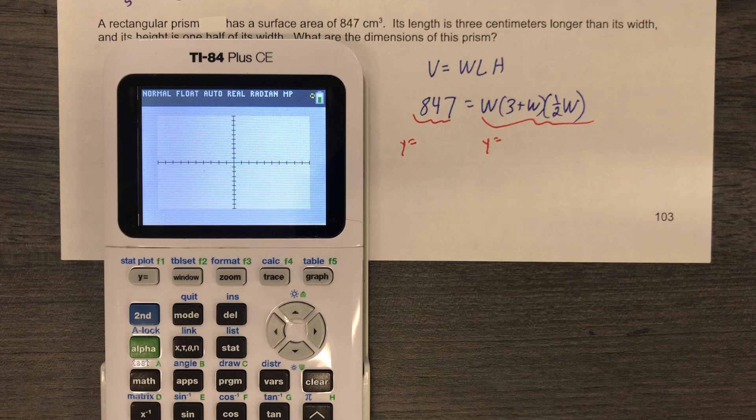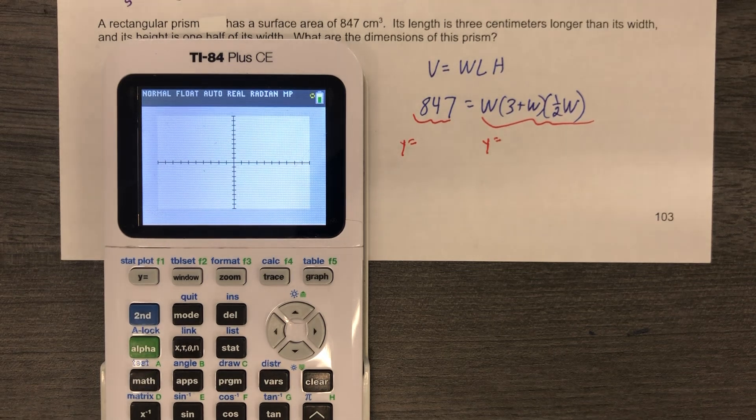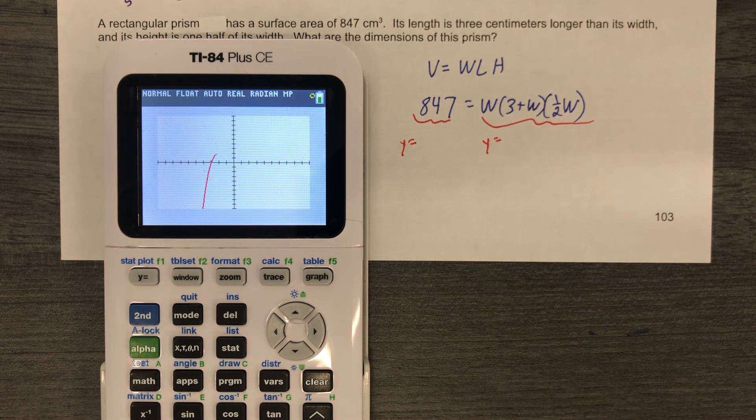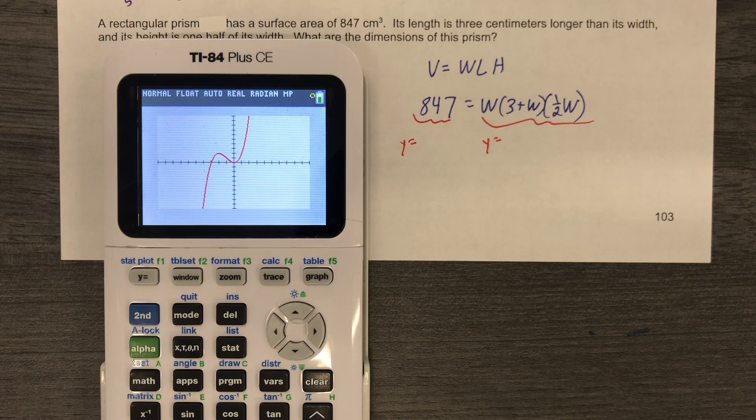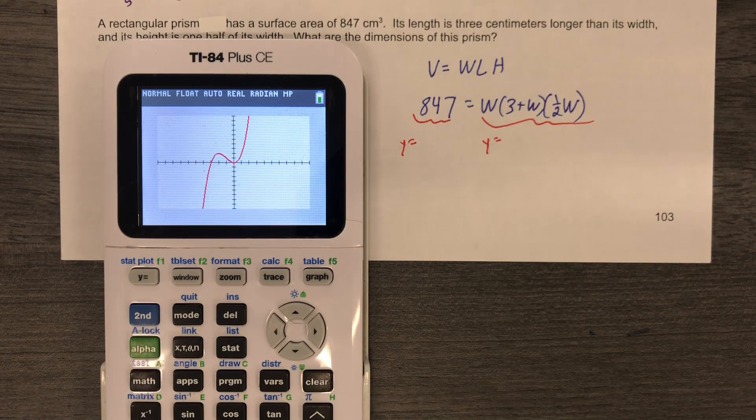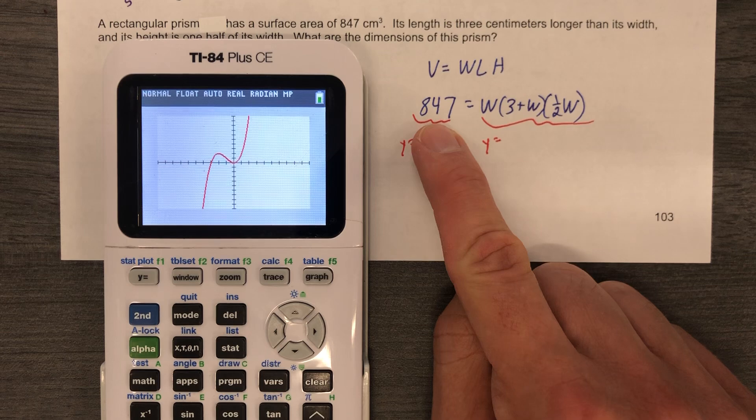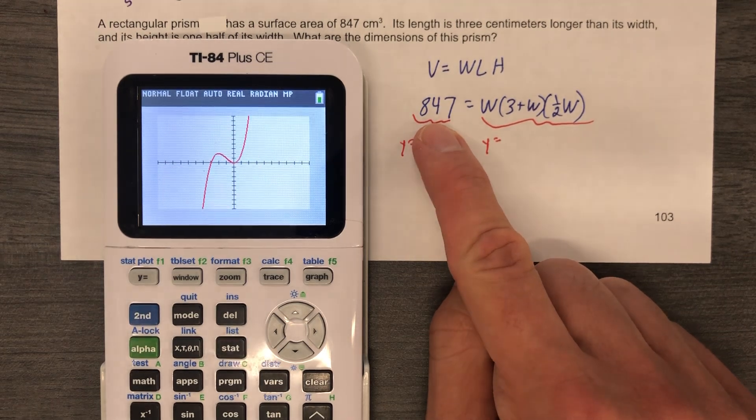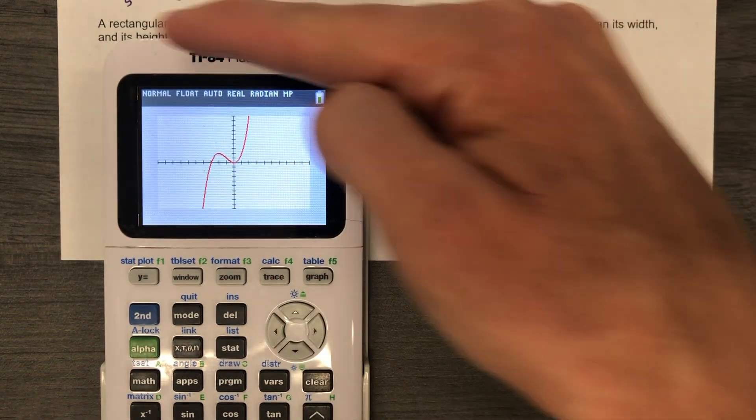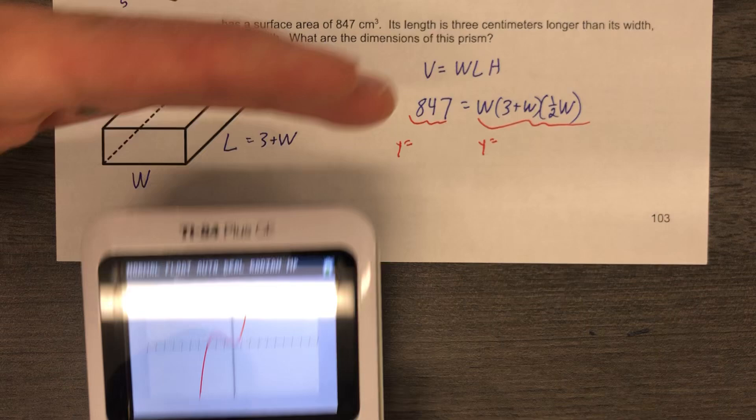So I just graph it and you graph it and we look at it and we realize, well, I don't know what I'm looking at. I'm looking at a cubic function, but I'm also supposed to be looking for 847. What's 847? 847 is way up here. I mean, we're just way, way, way yonder up here.